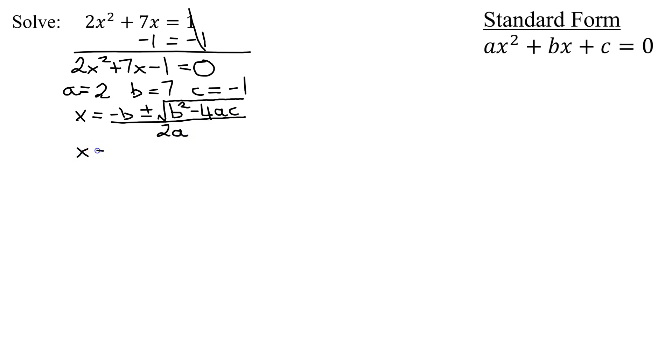So now all we have to do is plug in the values for a, b, and c we've already found. So x equals the negative b, so the opposite of b, so it's negative 7, plus or minus the square root of b squared, so that's 7 squared, minus 4, times a, which is 2, times c, that is negative 1. All divided by 2 times a, which is 2.